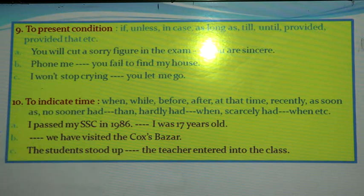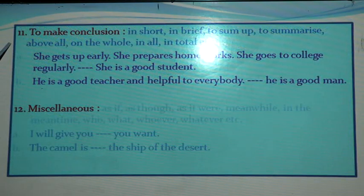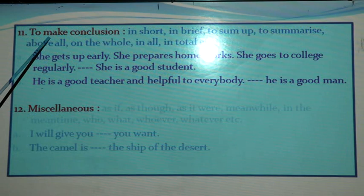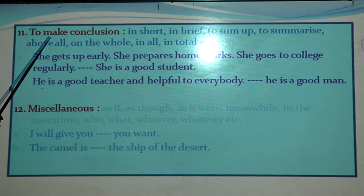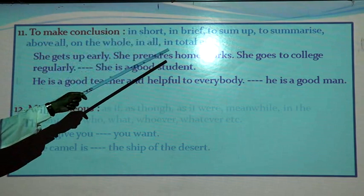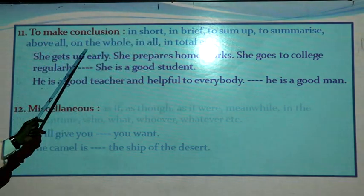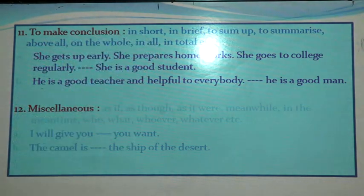Dear learners, we have to know the different rules of using the sentence connector in different sentences. Number eleven: to make conclusion. We know that in case of writing a paragraph, in the last sentence, we try to present the concluding idea, and we use sentence connectors like: in short, in brief, to sum up, to summarize, above all, on the whole, in all, in total, etc. These are used specially at the last sentence of a paragraph or any writing.